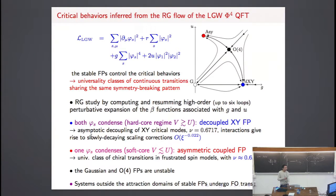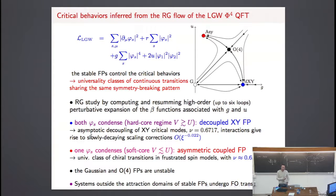This implies that if we observe a simultaneous condensation of both gases and the transition is continuous, then the asymptotic critical behavior is controlled by the coupled XY fixed point — and we know the critical exponents and all universal features. If instead we observe condensation of only one component with a continuous transition, the prediction is that it is controlled by the other stable fixed point, which has different critical exponents.